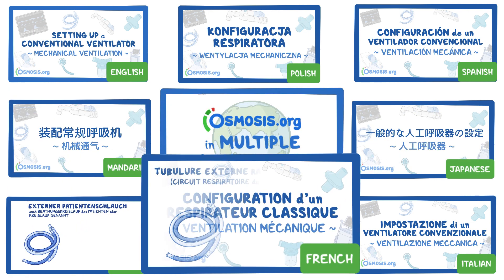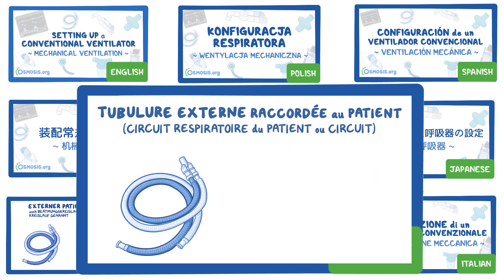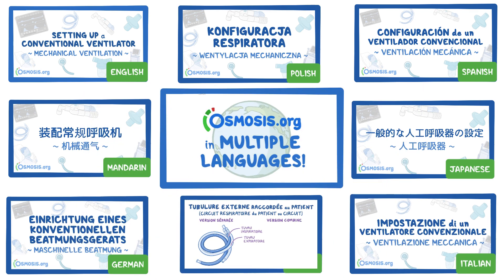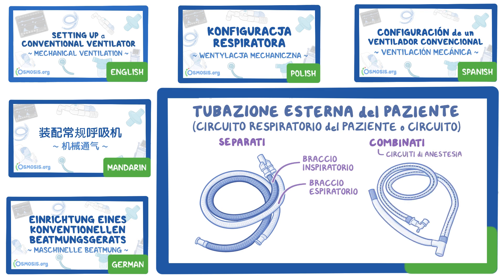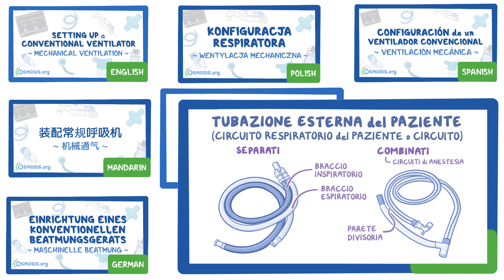This tubulure contains an inspiratory tube and an expiratory tube. They can be completely separated or combined, like in anesthesia circuits, by an internal divisive tube.